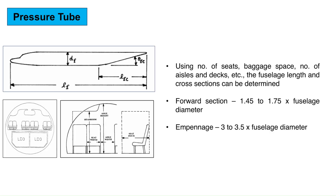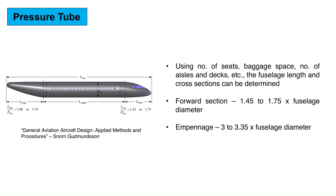Given the number of passengers, seating arrangement such as distance between seats and number of aisles and decks, and the size of the baggage compartment, the length and cross-section of the center section can be determined. The forward section typically ranges from 1.45 to 1.75 times the diameter of the fuselage. The length of the empennage ranges from 3 to 3.35 times the diameter for most airplanes. This fineness ratio has the least drag.